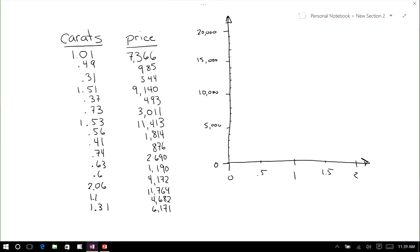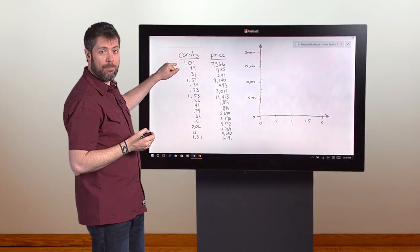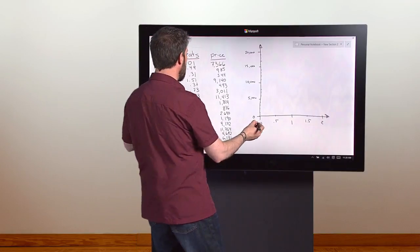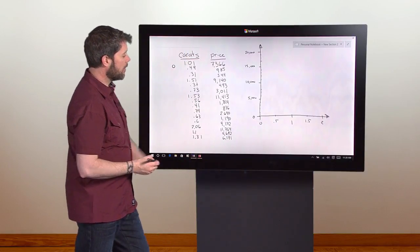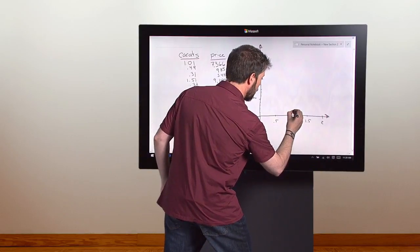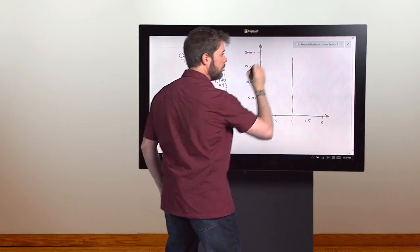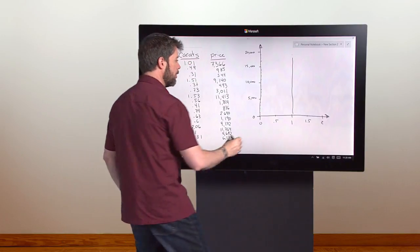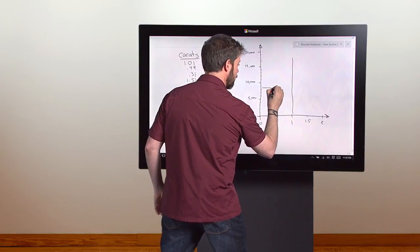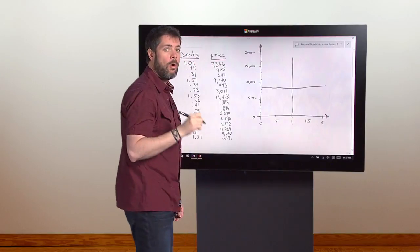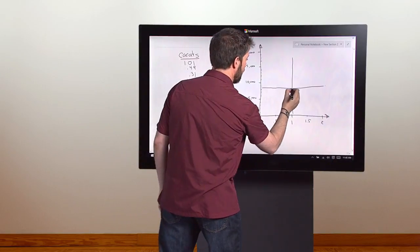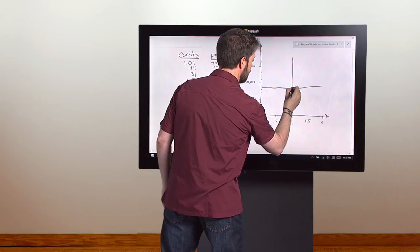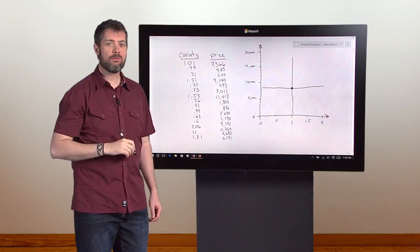We're going to take this data now and turn it into a scatter plot. This is a great way to visualize numerical data sets. For the first data point, we eyeball a vertical line at 1.01 carats. Then we eyeball a horizontal line at $7,366. Where they meet, we draw a dot. This represents our first diamond.